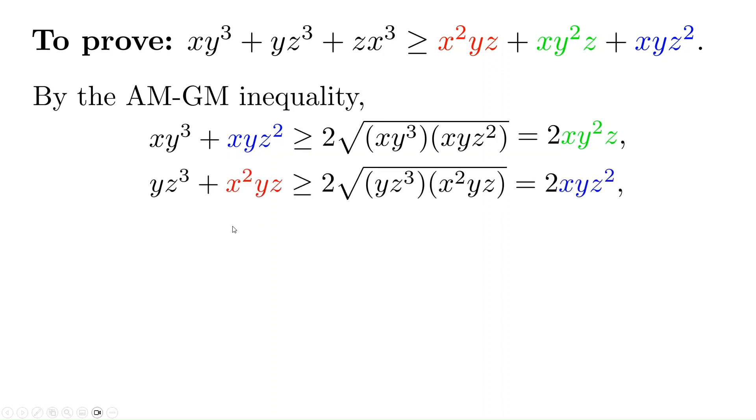Similarly, we have yz³, the second term on the left side, plus the red term on the right side is ≥ 2 times the blue term. And the last inequality is zx³ plus the green term ≥ 2 times the red term of the right-hand side.